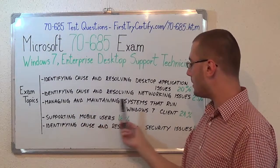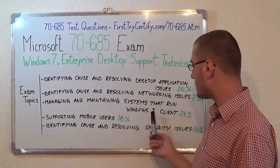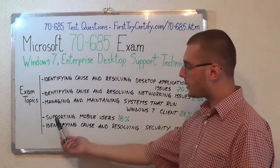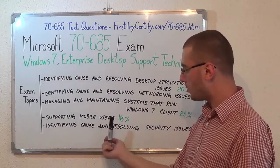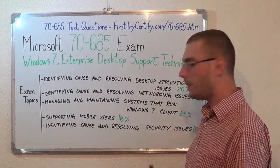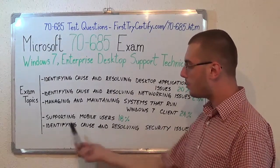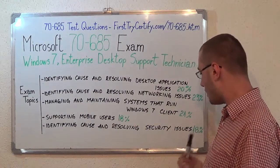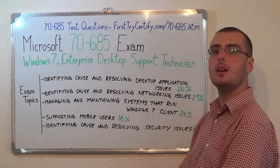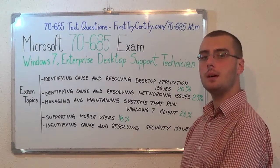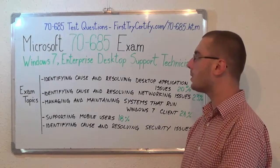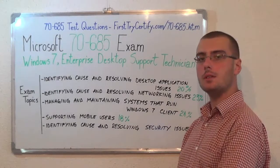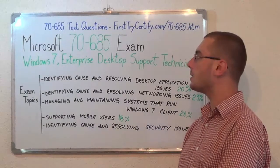Then, managing and maintaining systems that run Windows 7 client, with 21%. Next, we have supporting mobile users, with 18%. And the last one, identifying cause and resolving security issues, with 18%. You can visit firsttrycertify.com to successfully pass the 70-685 exam and get access to all these exam topics.